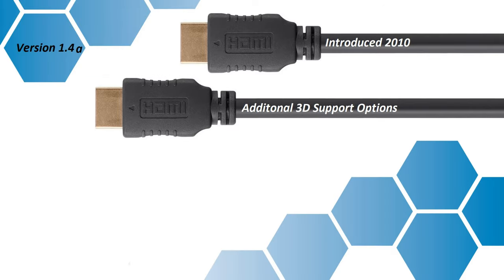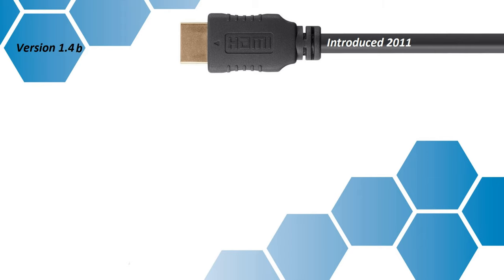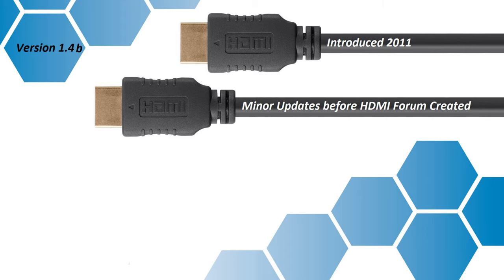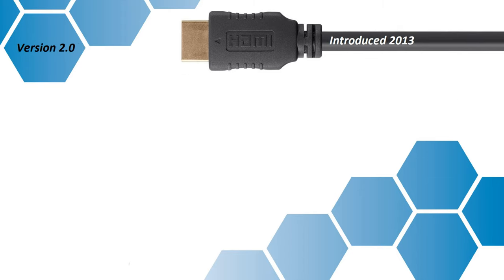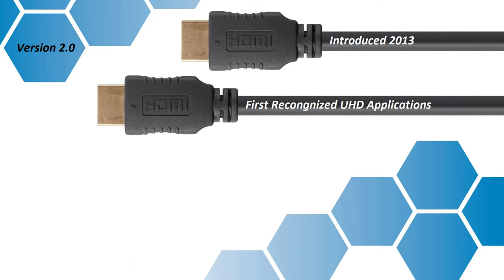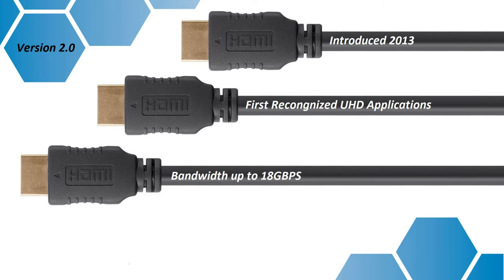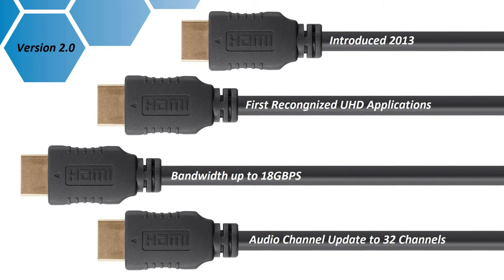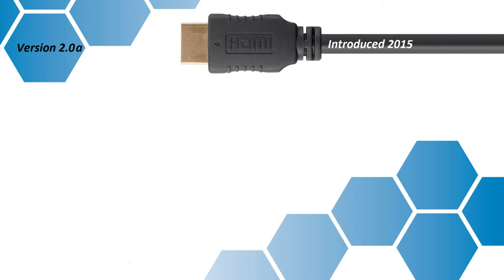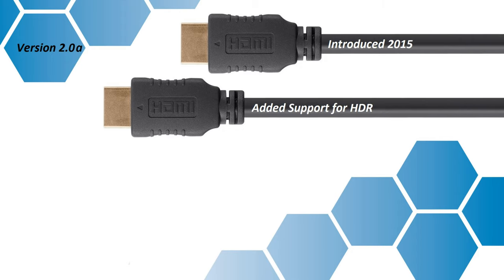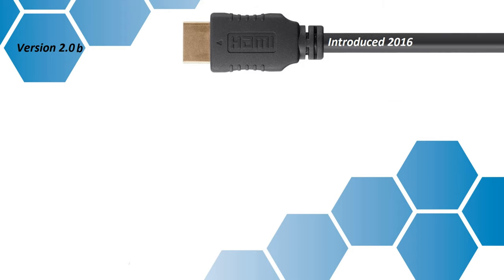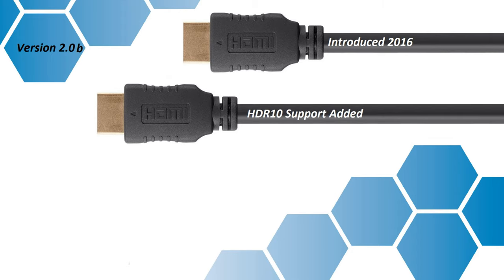In 2010, version 1.4a added some additional 3D support options. 2011 introduced 1.4b with just some minor HDMI updates. Then 2013, version 2.0 was another significant update — you can see UHD applications, higher bandwidth, and audio channels up to 32. Version 2.0a added support for HDR in 2016. Version 2.0b added HDR10 support, also known as Dolby Vision.